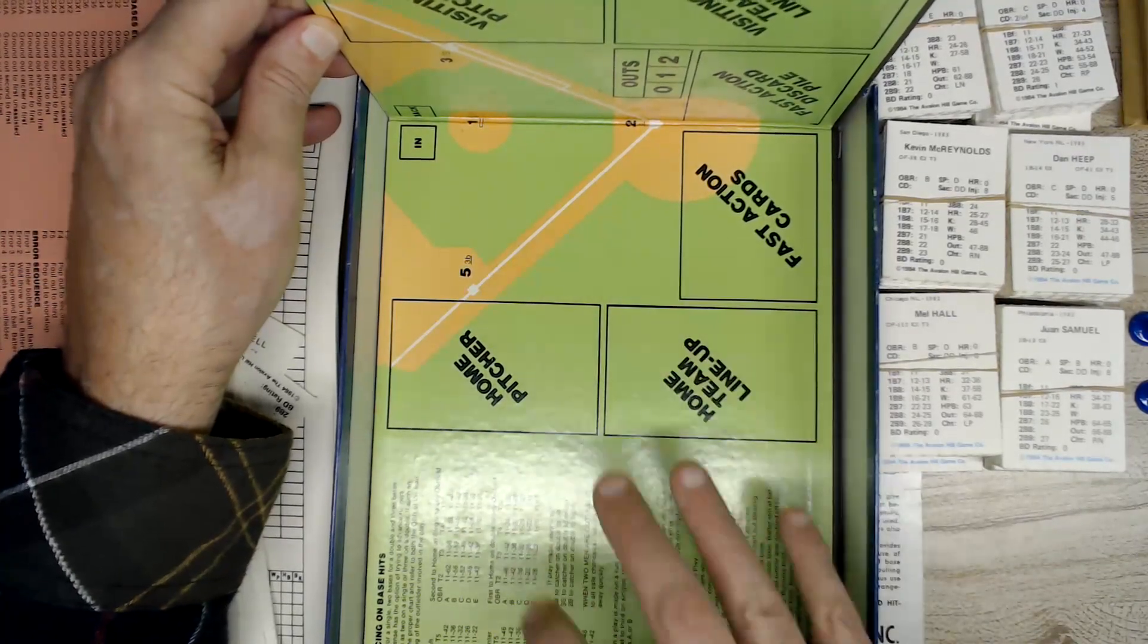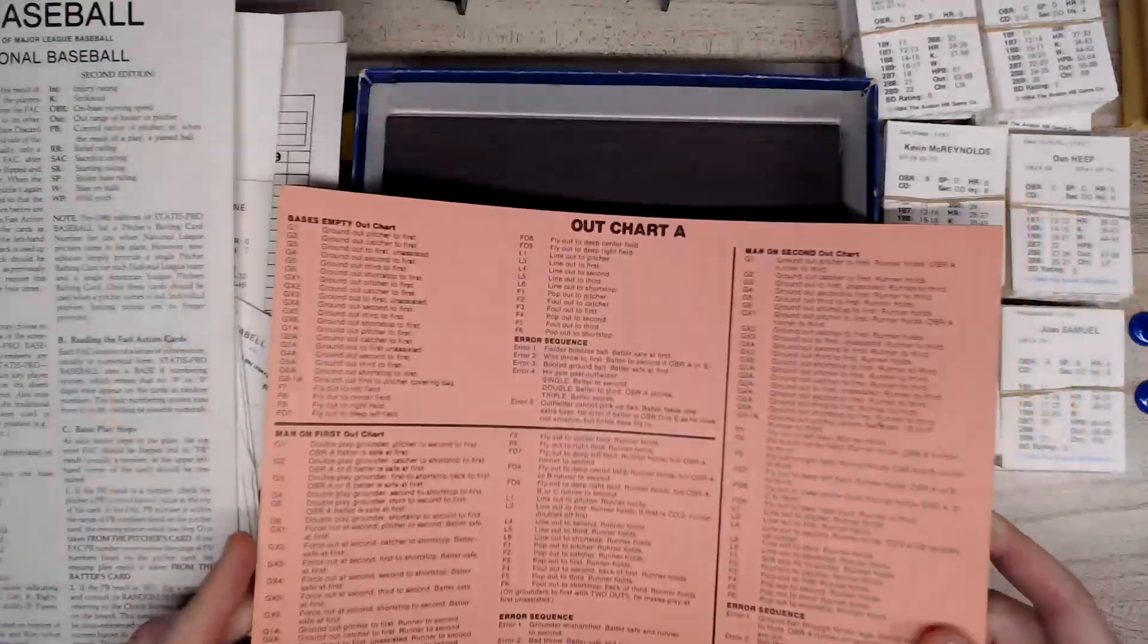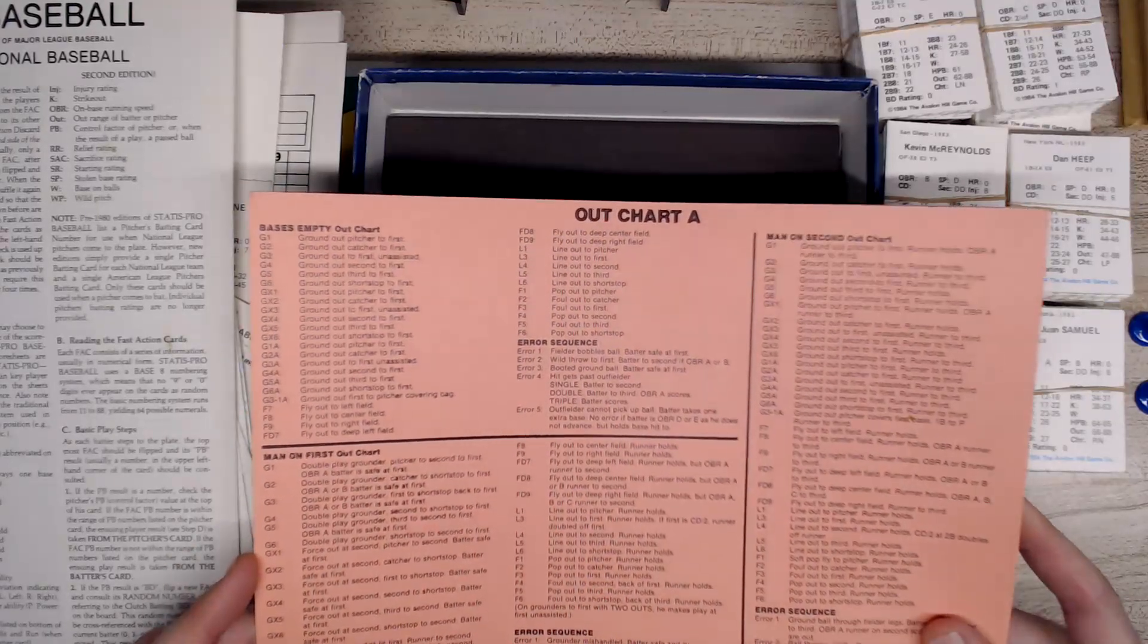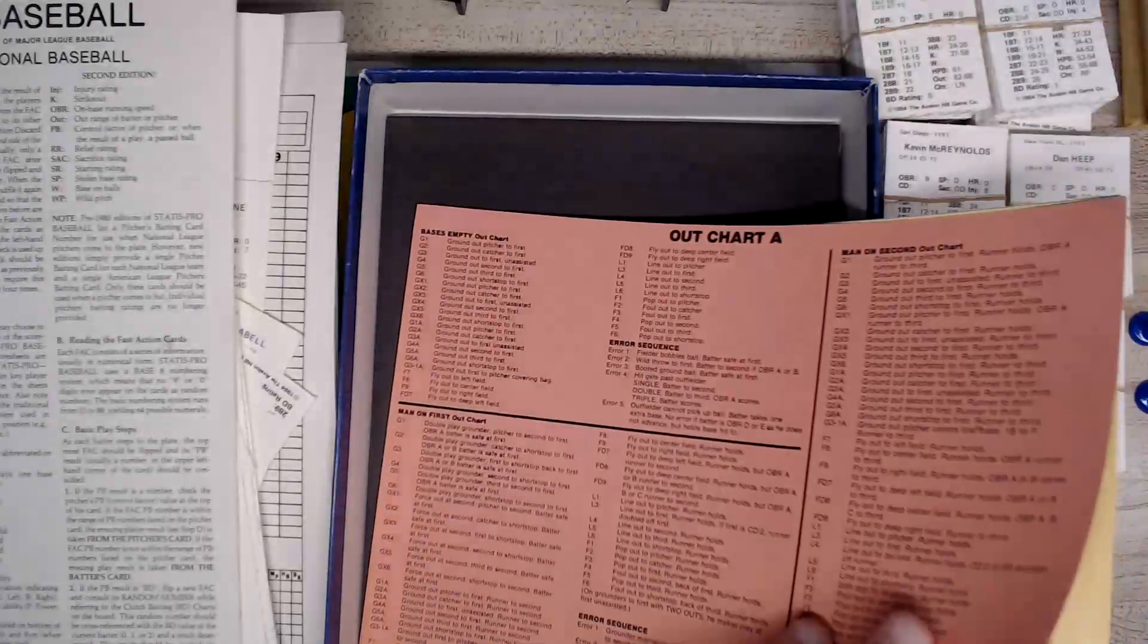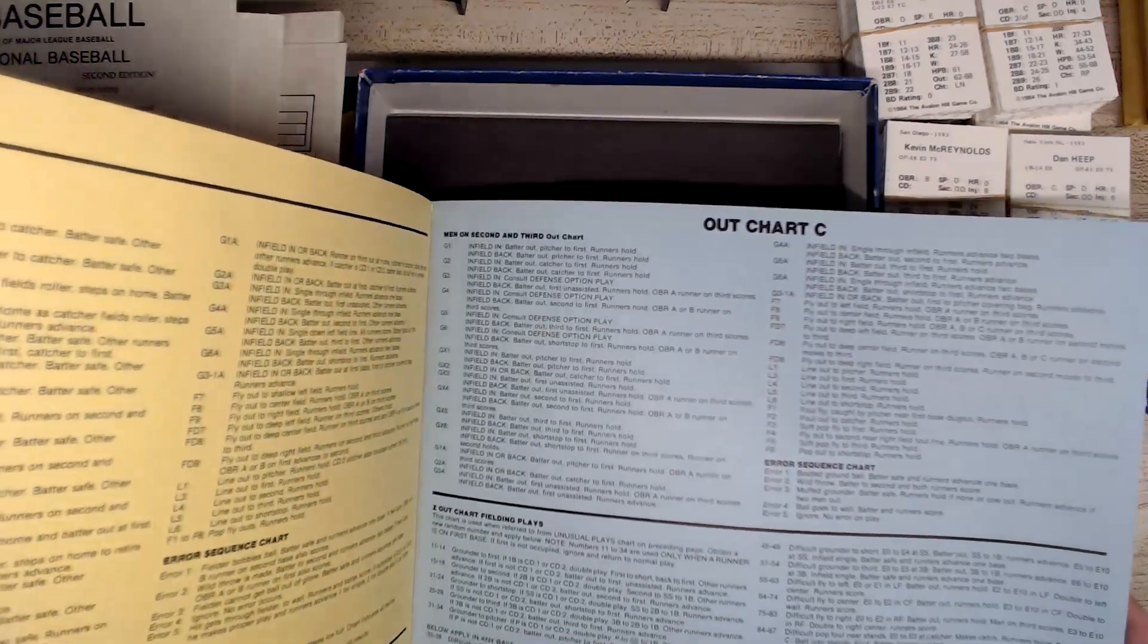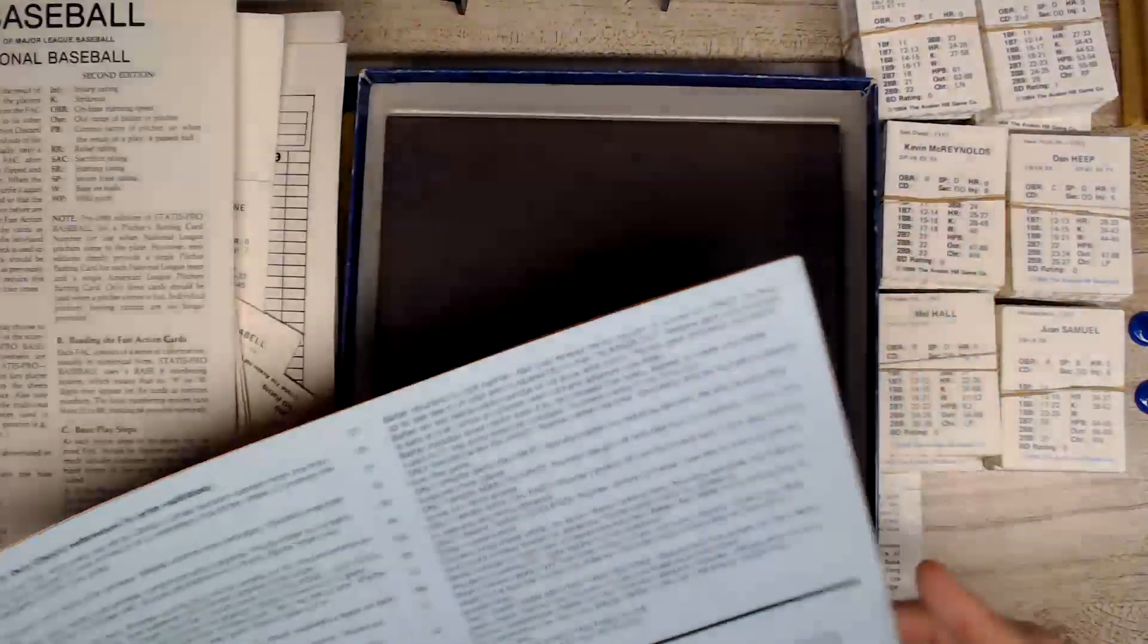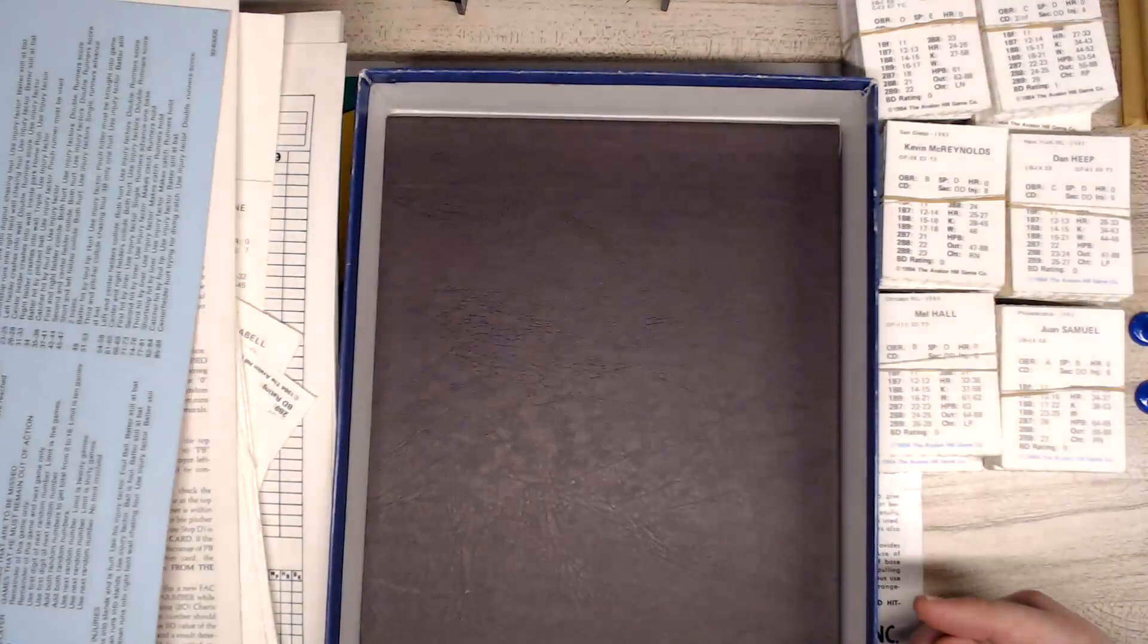The main charts like base stealing or bunting or anything like that is going to be on the playing board. And then what you have, these are the out charts: bases empty, man on first, man on second. These are still stuck together, they didn't even separate them. This last chart I think is your Z chart, this is where rare plays happen. You got your second and third out chart, bases loaded out chart. You can remember by the colors. Unusual plays is the blue.